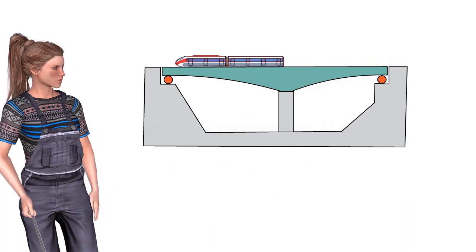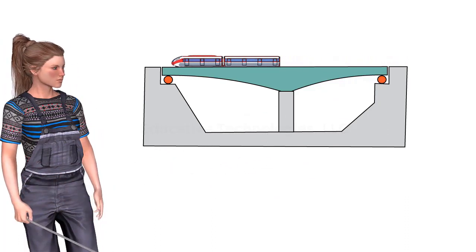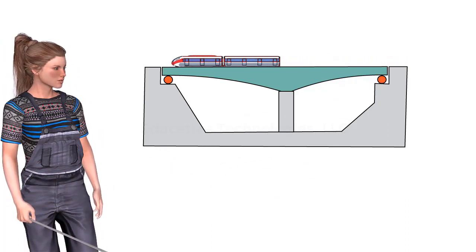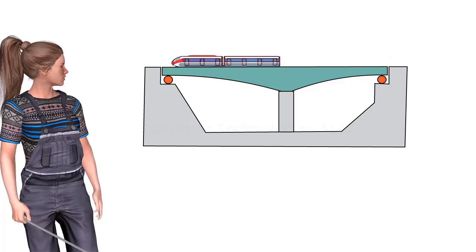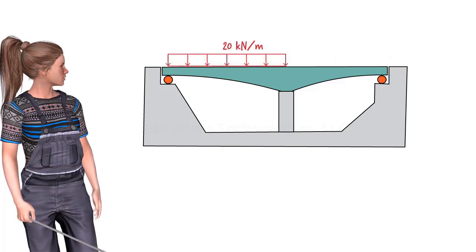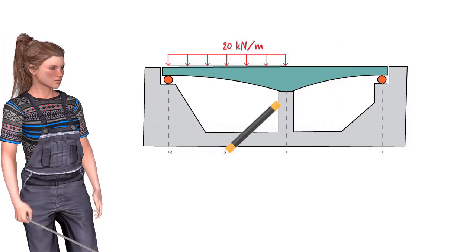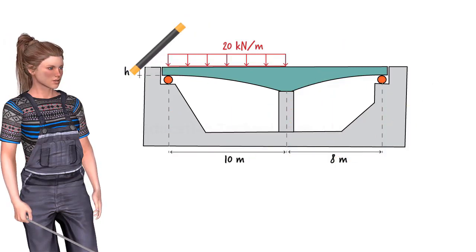We wish to analyze the structure and calculate its support reactions when the left span is under a uniformly distributed load of 20 kN per meter. We are told that the ratio of the deeper to the shallower height of the beam is 4.